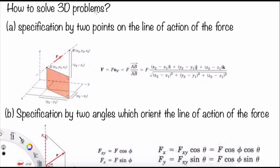To solve 3D problems, we have two approaches. The first is specification by two points. We can use this method when we know the starting point and the ending point. In this case, F equals F times the vector AB divided by the magnitude of AB, where AB has components in the x, y, and z directions.